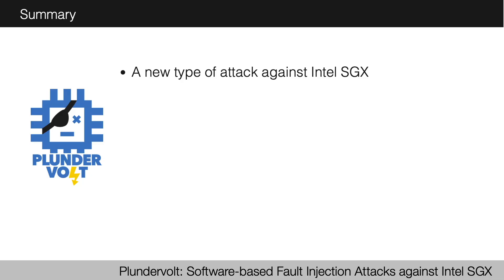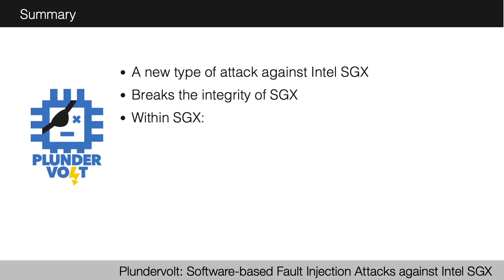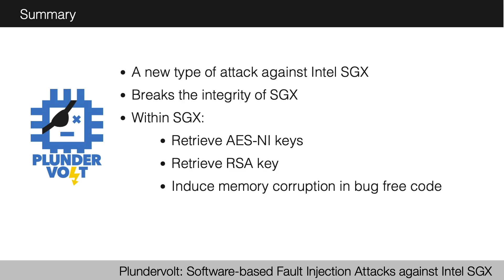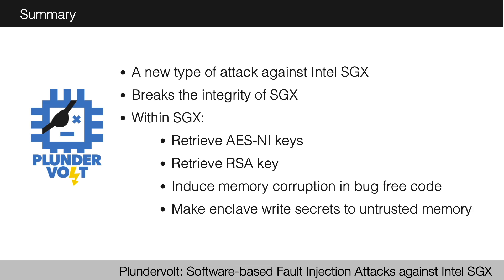To summarize our work: we created a new type of attack against Intel SGX. We broke the integrity of SGX, and within SGX we were able to retrieve AES New Instruction set keys, retrieve an RSA key, induce memory corruptions in bug-free code, and make the enclave write secrets to untrusted memory. You may wonder how this relates to the Intel SGX LVI paper, as both are about injection. But in LVI, the CPU is technically within its specifications and does what it's designed to do, even if that happens to be insecure. With Plunderbolt, we make the CPU run outside its specification and get it to do things it was never designed to do. Thank you for listening.